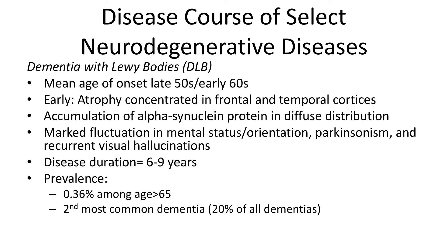Dementia with Lewy bodies has a mean age of onset in the late 50s and early 60s. Early on, the course is marked by atrophy concentrated in the frontal and temporal cortices. There is accumulation of alpha-synuclein protein with a diffuse distribution. It is marked by fluctuation in mental status, orientation, Parkinsonism, and recurrent visual hallucinations — all three features often present within a year or two of dementia onset. Disease duration ranges from 6 to 9 years. The prevalence is about 0.36% among those aged 65 and older, making it the second most common dementia, accounting for 20% of all dementias.